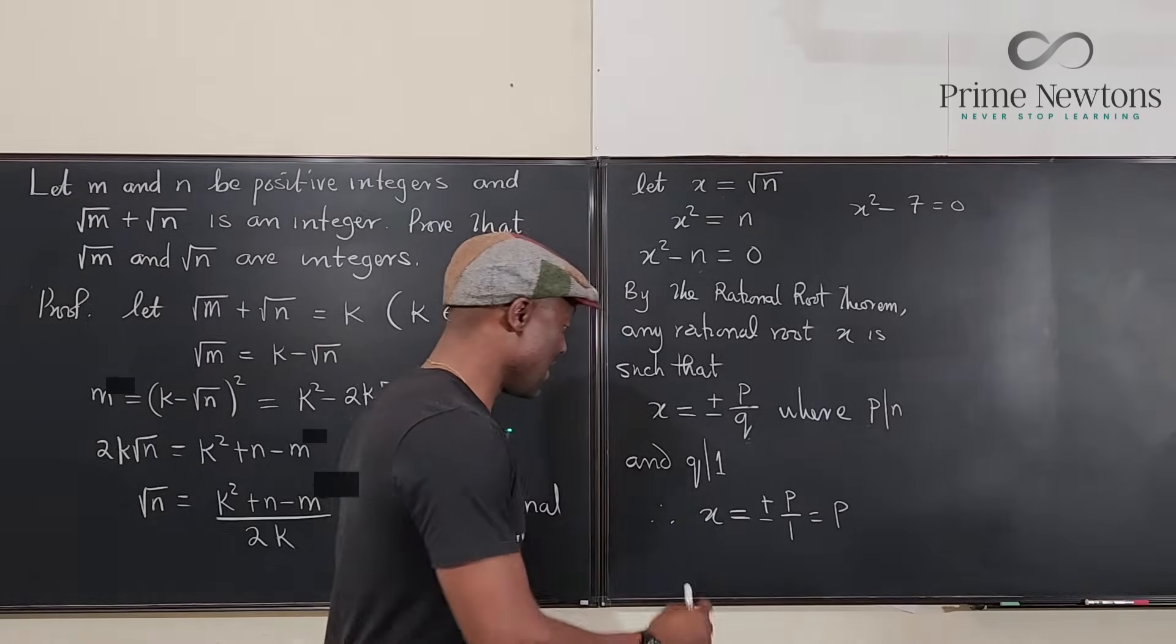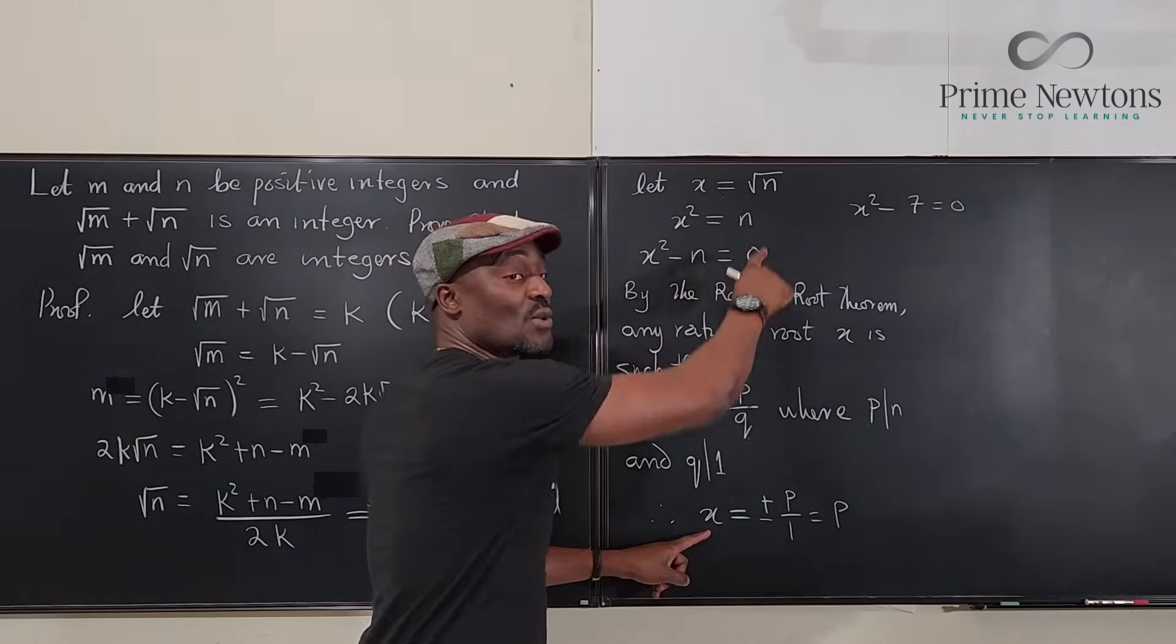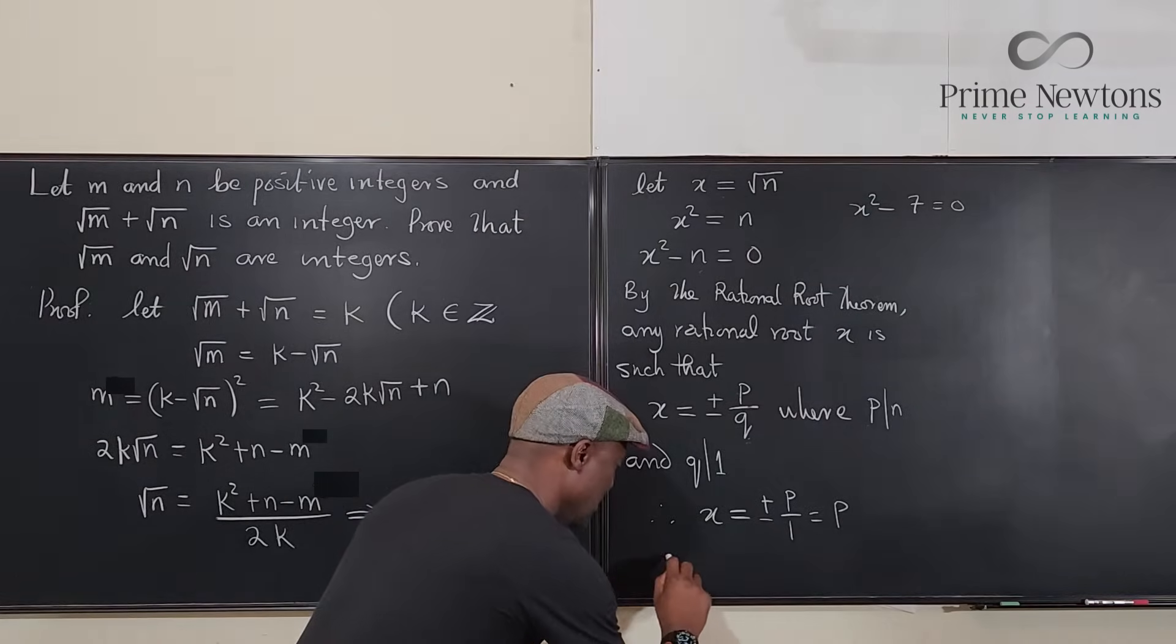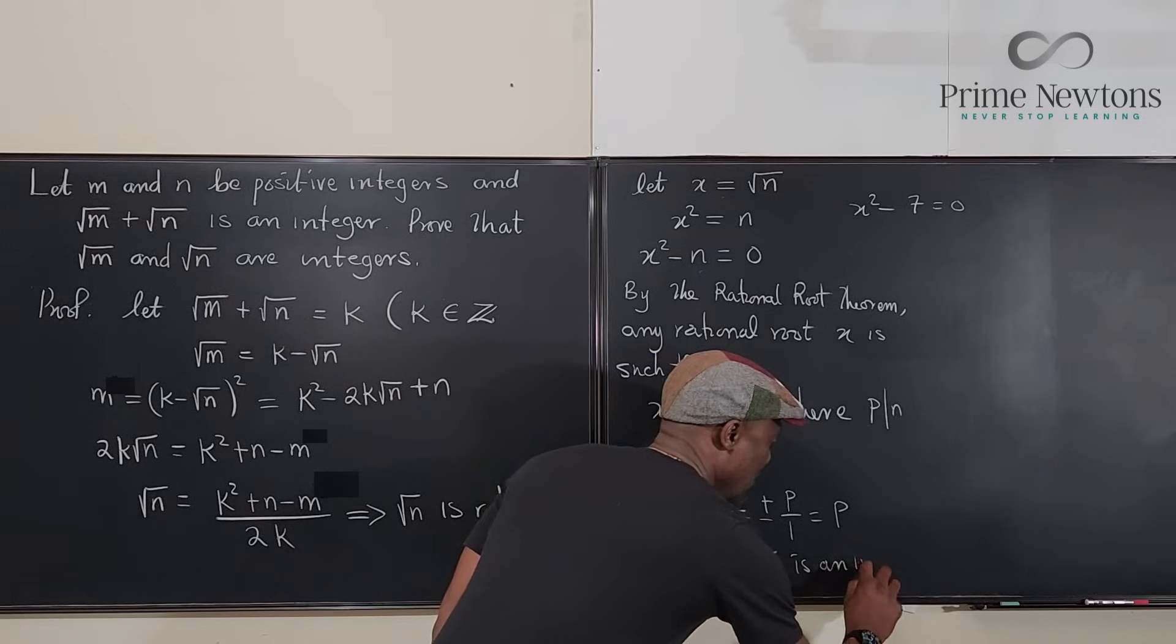We have just shown that x, which is equal to √n, is an integer. Thus, √n is an integer.